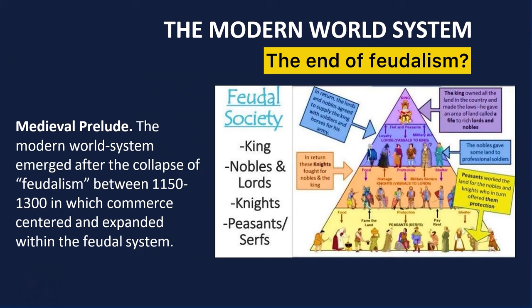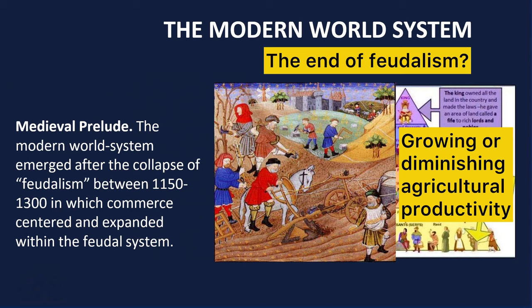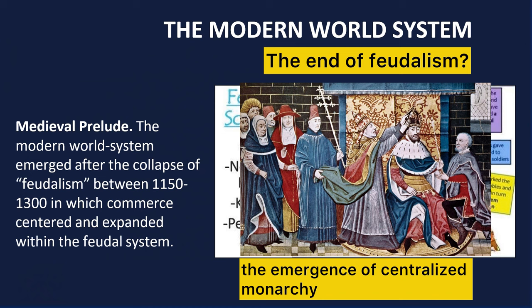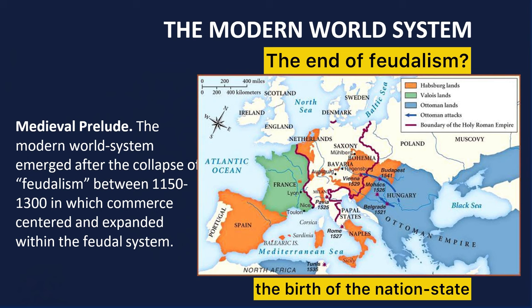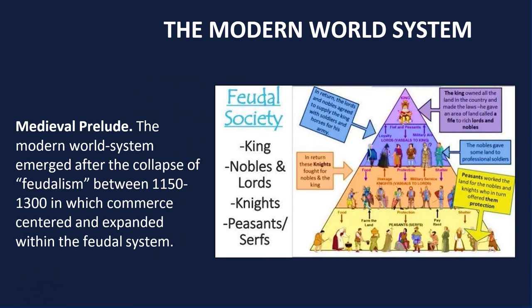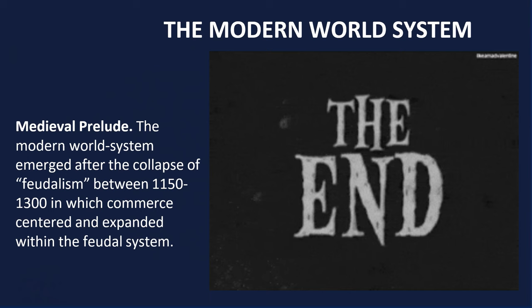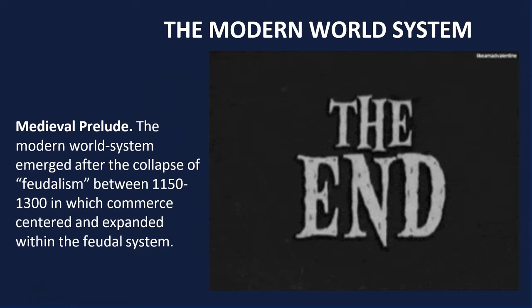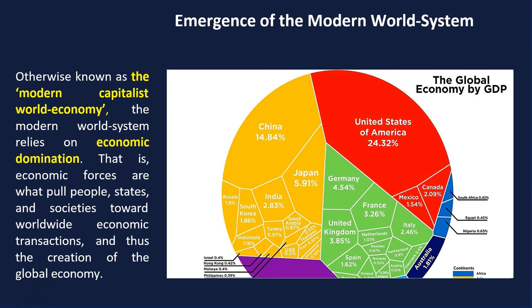What ended feudalism? It ended due to many factors, such as diminishing agricultural productivity due to climate change at that time, the rise of centralized monarchy, and the birth of so-called nation-states. Feudalism decayed and ended in the 15th century, and was replaced by mercantilism. After that came the emergence of the so-called modern world system.